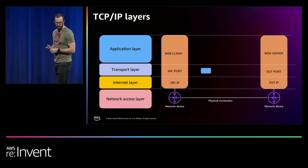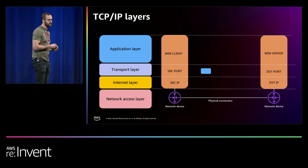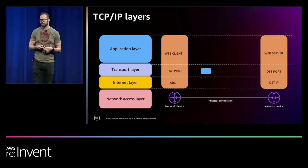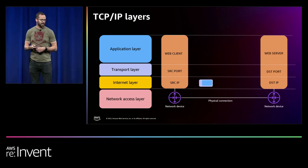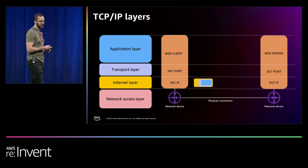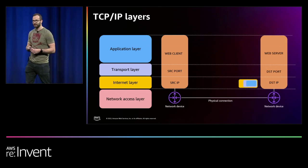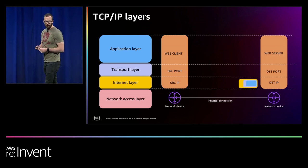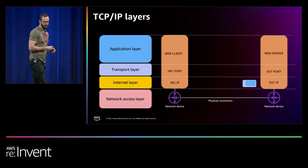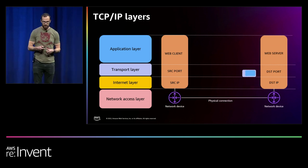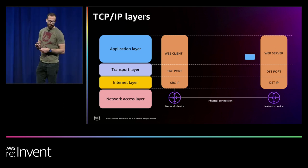Once the request is formulated, it's passed down the stack to the transport layer. The transport layer takes care of TCP, UDP, and port allocation. We'll allocate a source port, and we'll know the destination port — port 80, for example — so those ports will be added to the packet. That segment then goes down to the IP layer, where we add source and destination IP addresses so the systems can communicate. The web server will then strip the IP layer, look at the TCP ports, strip those, and pass the request to the web server application.